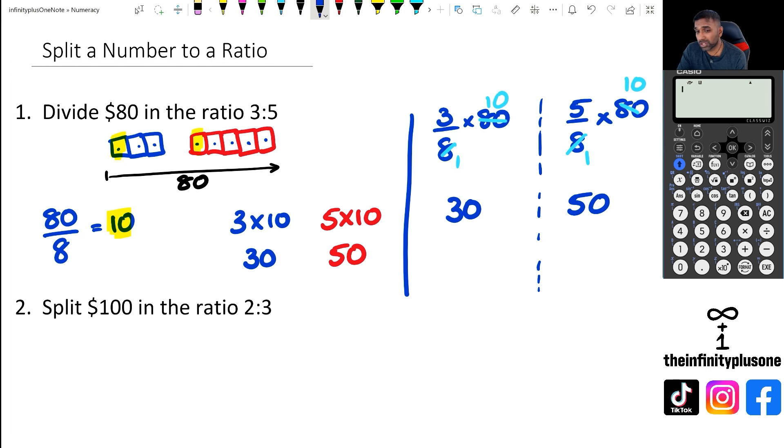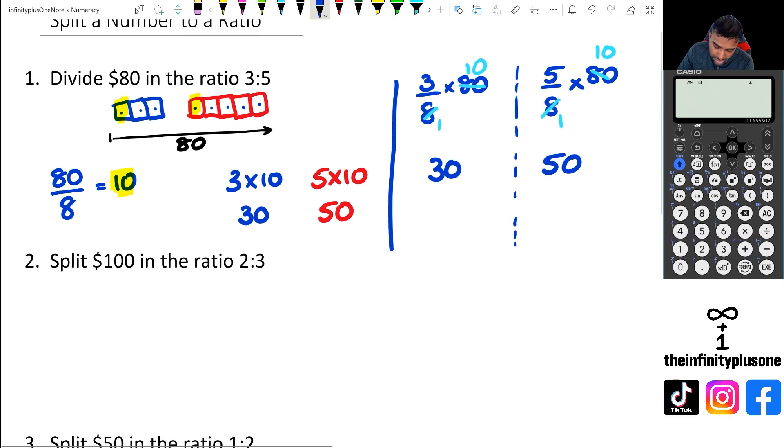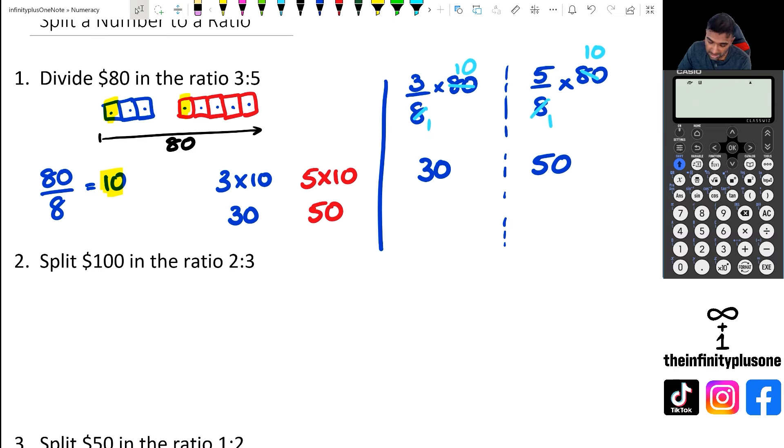So let's try that with question two. Question two I've got two to three, so altogether I've got five. So two out of five multiplied by 100 as one part of it, and then three out of five multiplied by 100 as the second part of it.